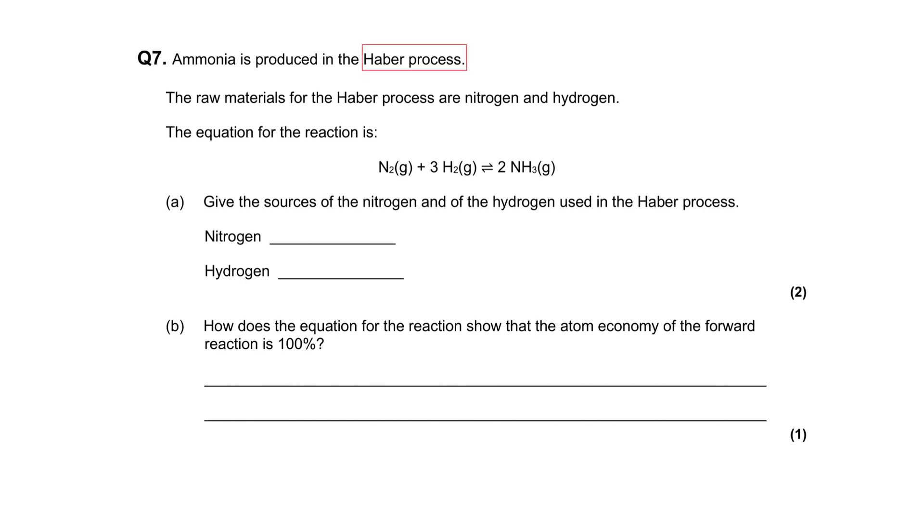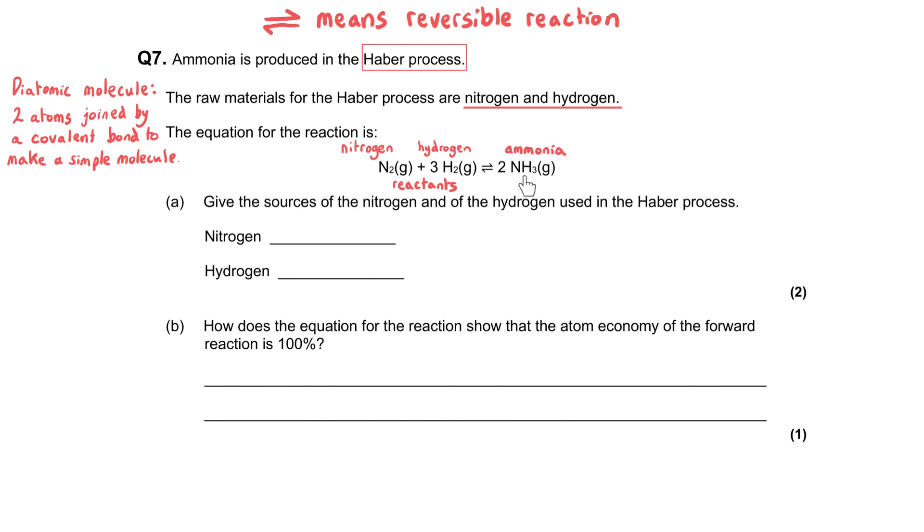Ammonia is produced in the Haber process. The raw materials for the Haber process are nitrogen and hydrogen, and the equation for the reaction is shown here. We can see the nitrogen N2, diatomic gas, and hydrogen H2, also a diatomic gas. They are the reactants. It's a reversible reaction, and we're producing the ammonia gas, which is the main point of the Haber process. We've been asked to give the sources of the nitrogen and the hydrogen used in the Haber process.